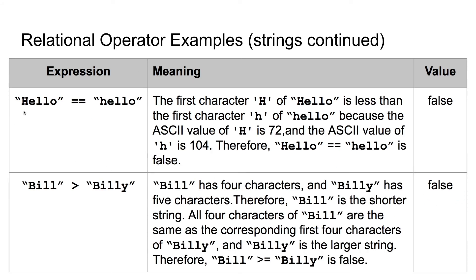Now let us look at the word "hello" with a capital H versus "hello" with a lowercase h. The first character capital H is less than lowercase h because the ASCII value of capital H is 72 and the ASCII value of lowercase h is 104. Therefore, these two values are different, so they cannot be equivalent, and this expression is false.